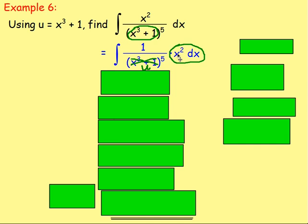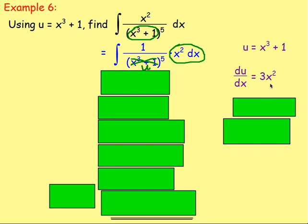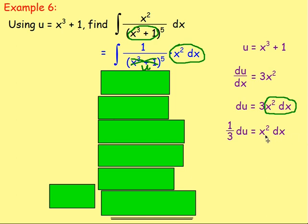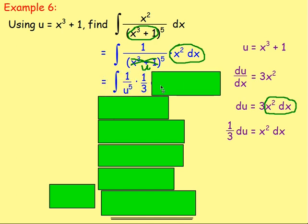So I'd have 1 over u to the power of 5 times x squared dx. But I don't want it with x's and u's — I want everything in terms of u. To find what x squared dx is in terms of u, take the substitute u equals x cubed plus 1 and differentiate. Differentiating u with respect to x gives du/dx equals 3x squared. Getting u's on one side and x's on the other: du equals 3x squared dx. To find x squared dx on its own, divide both sides by 3, giving 1/3 du equals x squared dx.